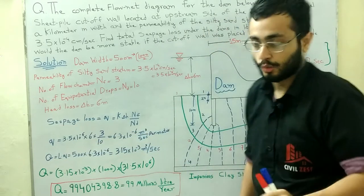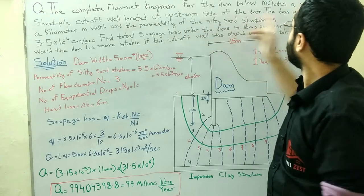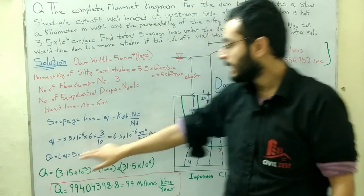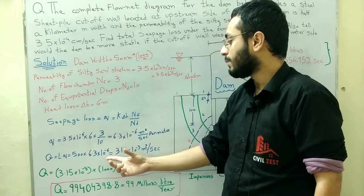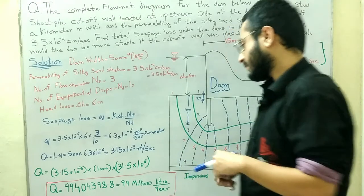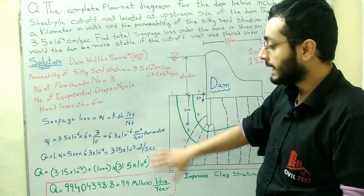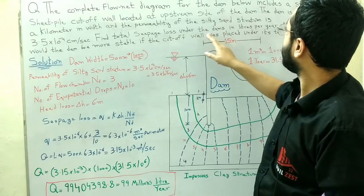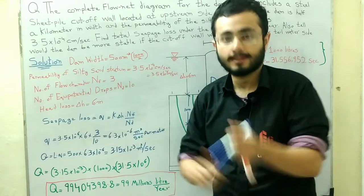To find the total seepage loss for the entire dam, we calculate capital Q = L × q, where L is the dam width of 500 meters. So Q = 500 × 6.3 × 10⁻⁶ = 3.15 × 10⁻³ m³/s. This is the total seepage loss for the complete dam. The question asks for the answer in liters per year, so we need to convert units.